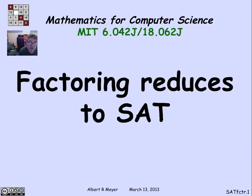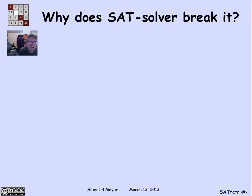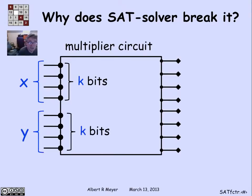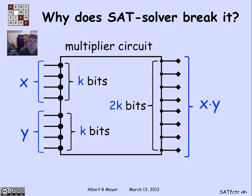Suppose that we have a satisfiability tester and use it to find how to factor a number n. The key observation about how you use a SAT solver begins with noting that it's easy enough to design a digital circuit that multiplies — that does arithmetic multiplication. It has some number of bits reserved for an input x, say k bits, and another k bits for an input y, and it has 2k output lines that produce the digits of x times y.